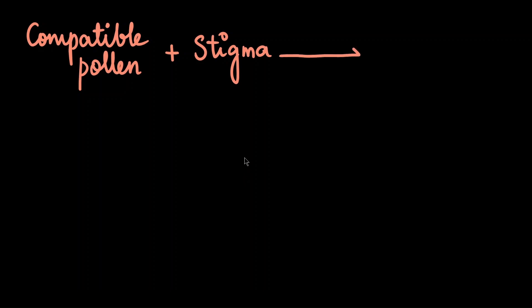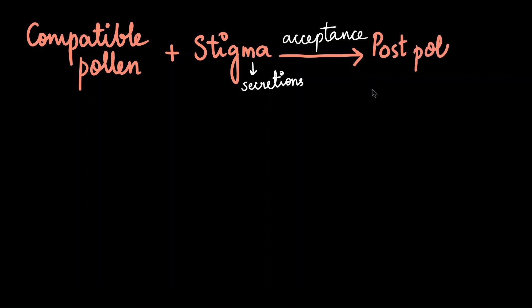Getting back to the process: when a compatible pollen falls on a stigma and the stigma accepts it, the stigma gives out slimy secretions which are absorbed by the pollen, and this leads to post-pollination events.